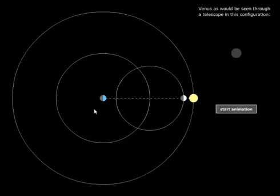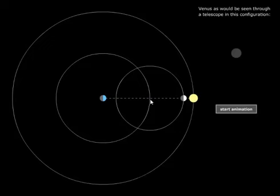In Ptolemy's system, the Earth is at the center, the Sun is just orbiting around, and Venus is orbiting on a circle on a circle — this epicycle and deferent thing as it goes around. And in his system, because Venus is always relatively close to the Sun in the sky, he had it so that Venus orbited exactly the same time around — one year — just like the Sun does.